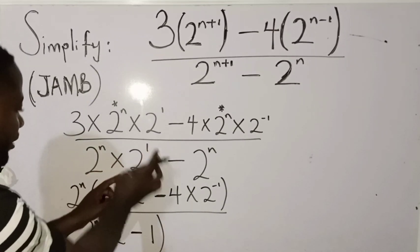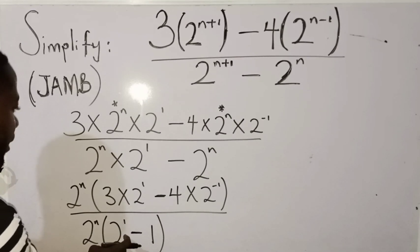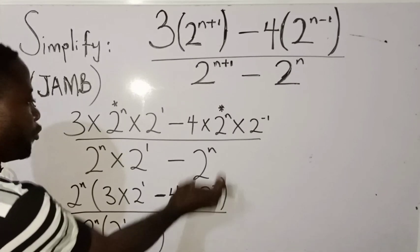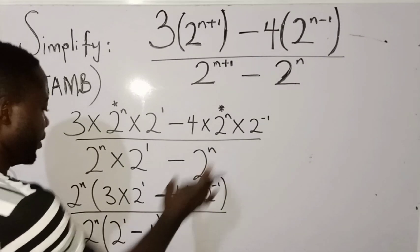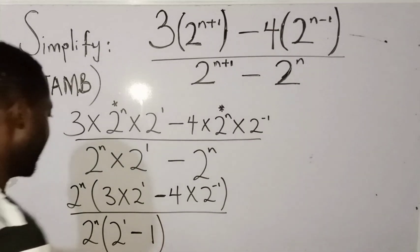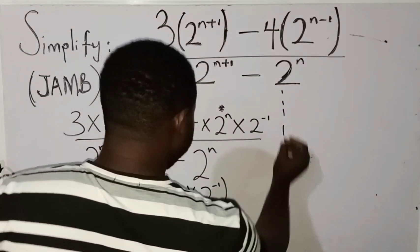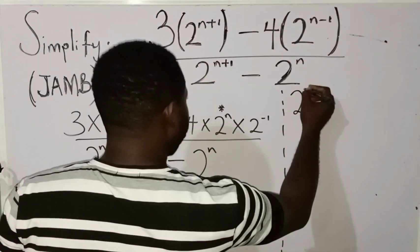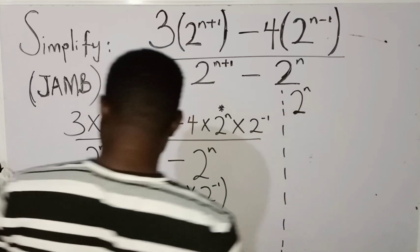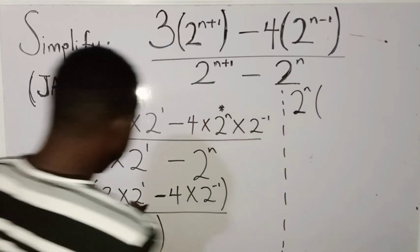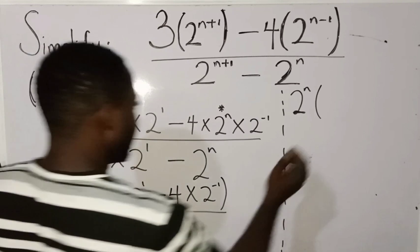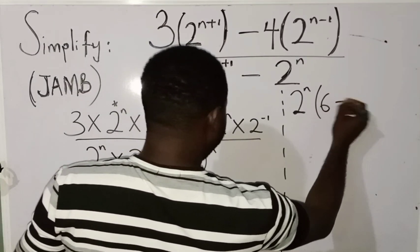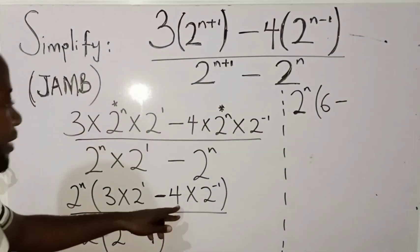So 2 raised to power n times 2 raised to power 1 gives us the first term, and 2 raised to power n times 2 raised to power n gives us minus 2 raised to power n. That is how to factorize it. Now, looking at this, outside the brackets I have 2 raised to power n, and in the brackets, 3 times 2 raised to power 1 is going to give me 6. So I am going to have 6 minus...